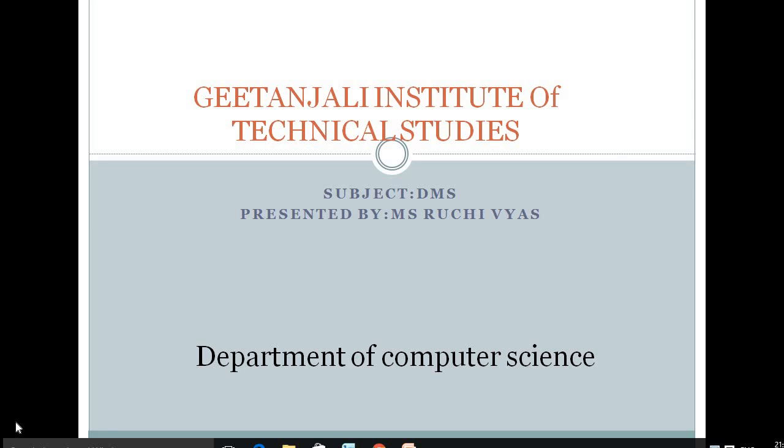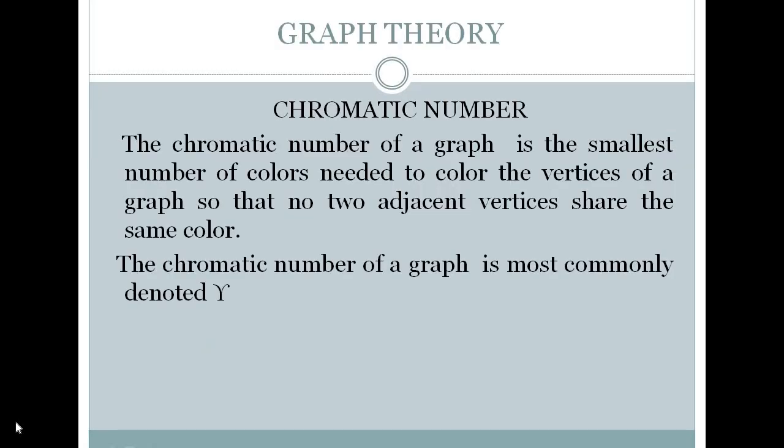Hello students, today I will be covering a topic from unit 5 of discrete mathematical structures, which is chromatic number. What is a chromatic number? The chromatic number is the minimum number of colors needed to paint all the vertices of a graph so that no two adjacent vertices share the same color. It is denoted by psi.